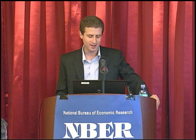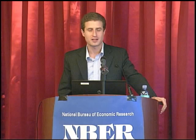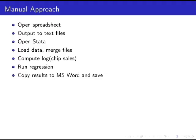There are two main reasons not to do this. The scientific reason is that it's important for you and others to be able to get back to every number from the data source — this approach gives no way to do that. The efficiency reason is that if you want to change something, like using the square root of potato chip sales instead of the log, you have to go back and repeat all these nuisance steps while remembering how you did them before.